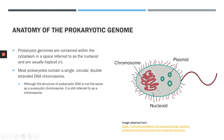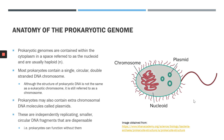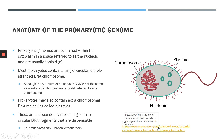As an additional piece of information, some prokaryotes do contain linear chromosomes. However, we'll be referring to bacterial prokaryotes for this lecture, which usually have circular chromosomes. In addition to its circular chromosome, prokaryotes can also have extra-chromosomal DNA molecules called plasmids. Plasmids are independently replicating, smaller circular DNA fragments that are dispensable, and so prokaryotes can function without them. If you'd like to read more about this, please navigate to the Khan Academy page on prokaryotic structure.